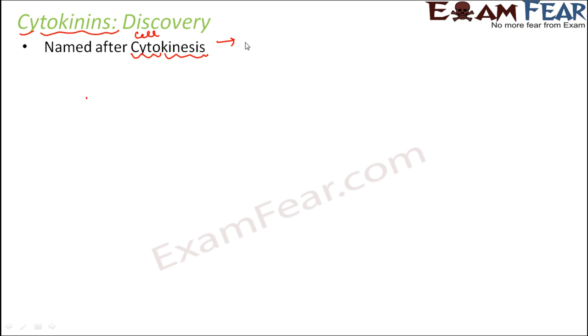Let us see how cytokinins were discovered and why they are called cytokinins. The term cytokinins is derived from the word cytokinesis, and cytokinesis means cell division — cyto means cell, kinesis is from the word kinetic, meaning movement. So altogether, cytokinins promote cell division.